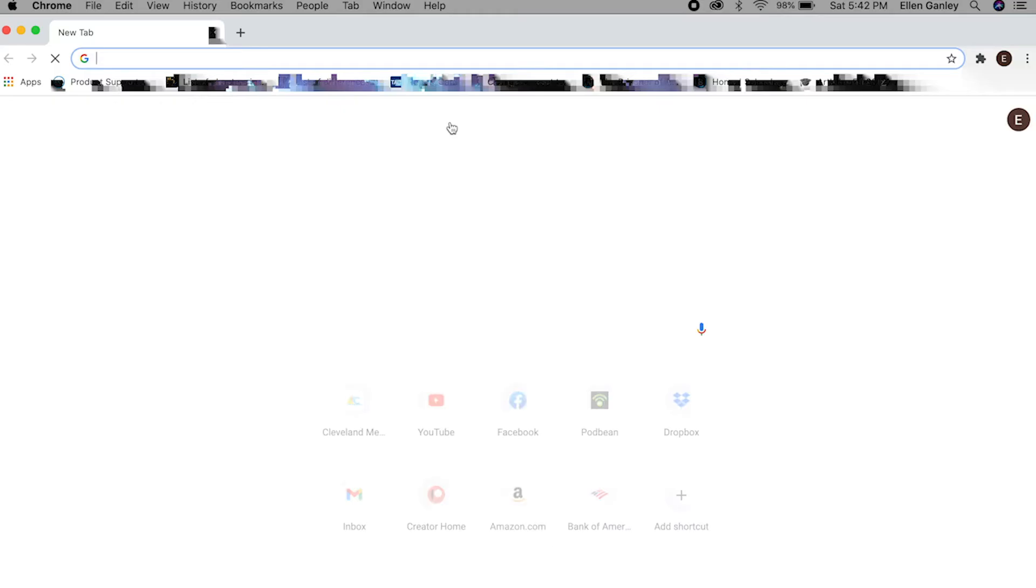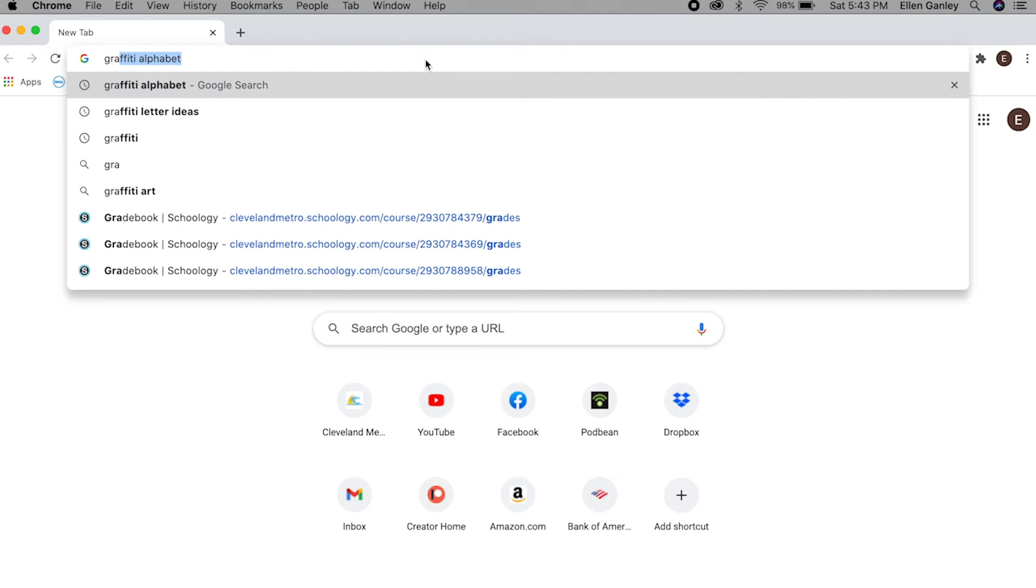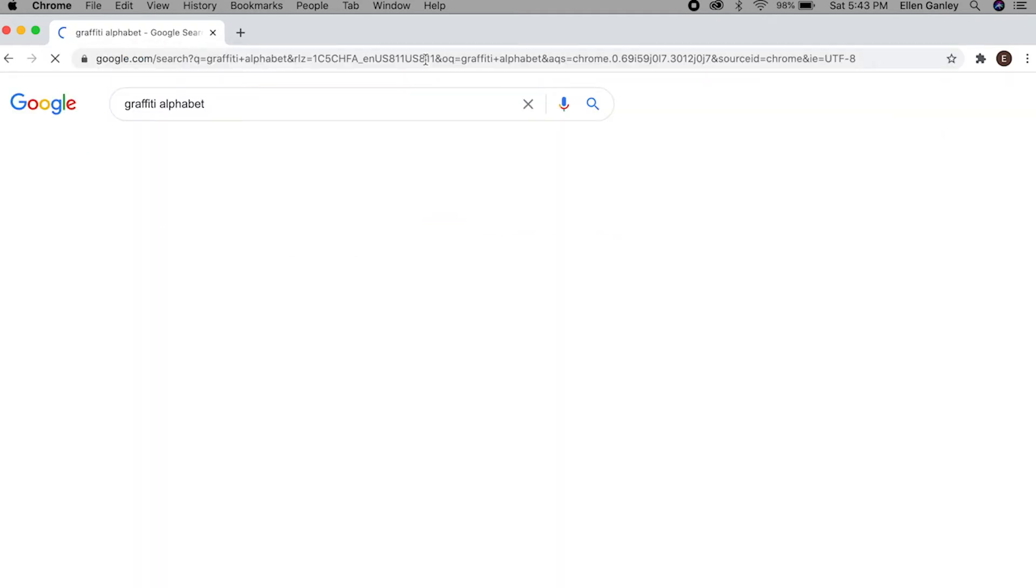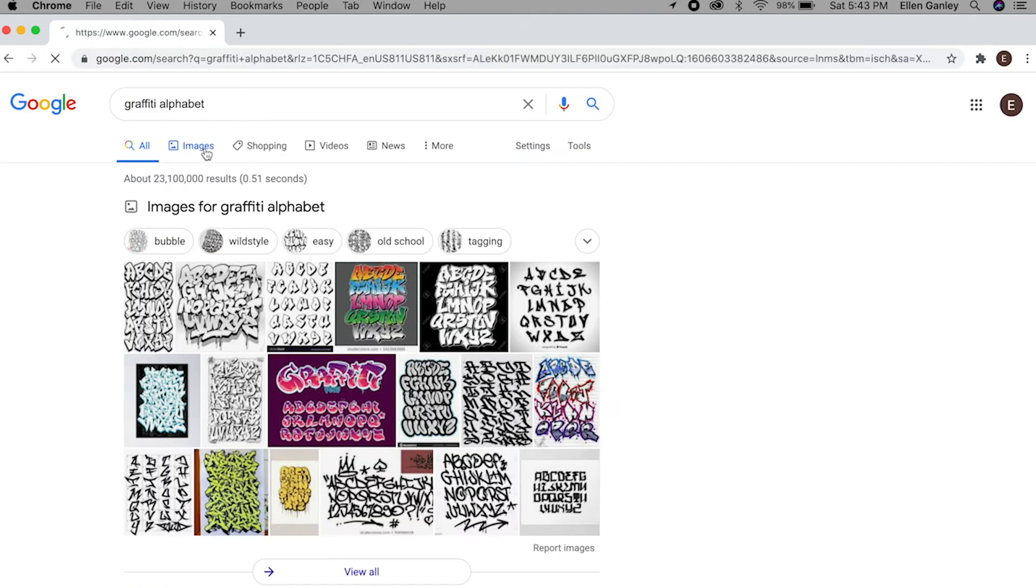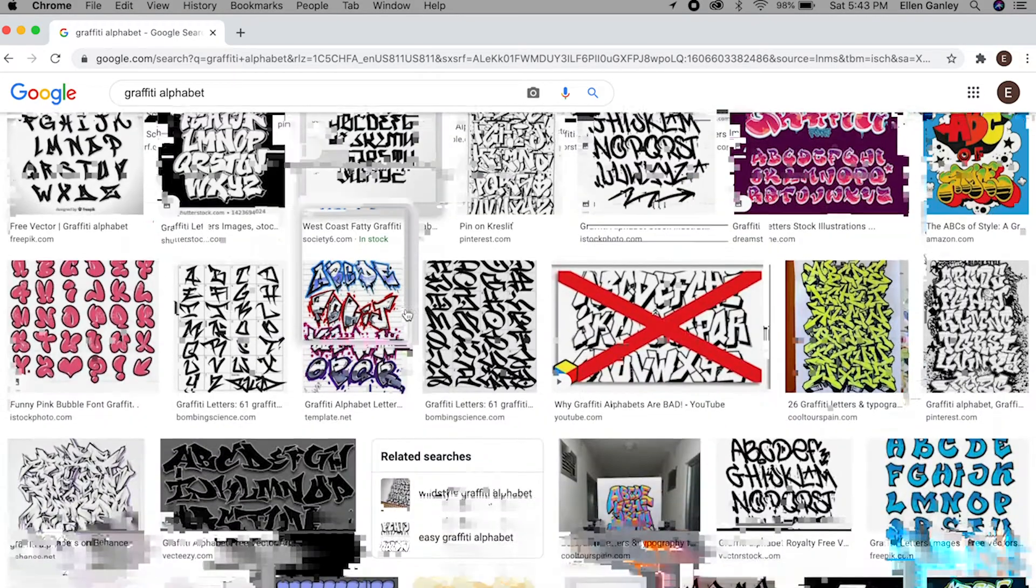First you want to open up Google and then type in graffiti alphabet. Go to images. This is going to bring up a whole bunch of different styles of graffiti.